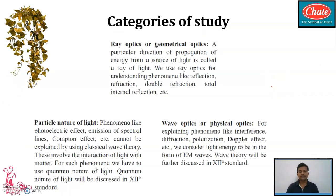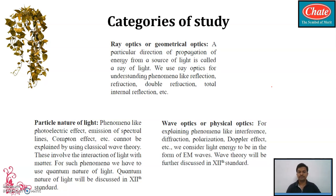According to our topic, light can be studied in three different categories: ray optics, wave optics, and particle nature. For ray optics or geometrical optics — a particular direction of propagation of energy from a source of light is called a ray of light. A ray of light is transverse in nature, and it travels in a particular direction from the source.